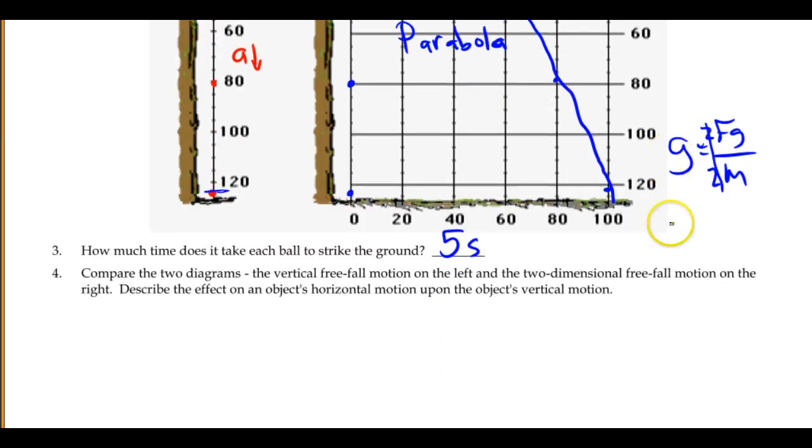If you look at the two diagrams, the vertical freefall on the left and the two-dimensional freefall on the right, the effect of the object's horizontal motion upon the vertical motion is absolutely none. The downward motion was exactly the same in both cases. Having a horizontal initial velocity, a Ux, had no impact on what happened in the vertical. That's a really important concept with projectiles.